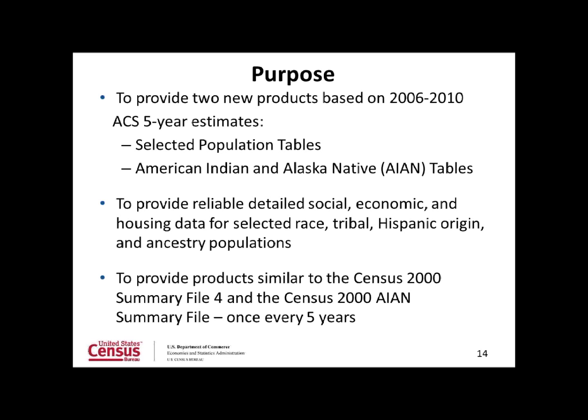Historically, these types of data products were produced from the decennial Census long form but available only once every 10 years. With the onset of the American Community Survey, these data became available on an annual basis, and now with the new ACS five-year products they are available in iterated form for many diverse racial and ethnic communities across the United States. These new products are planned to be produced once every five years, and this was the first release.